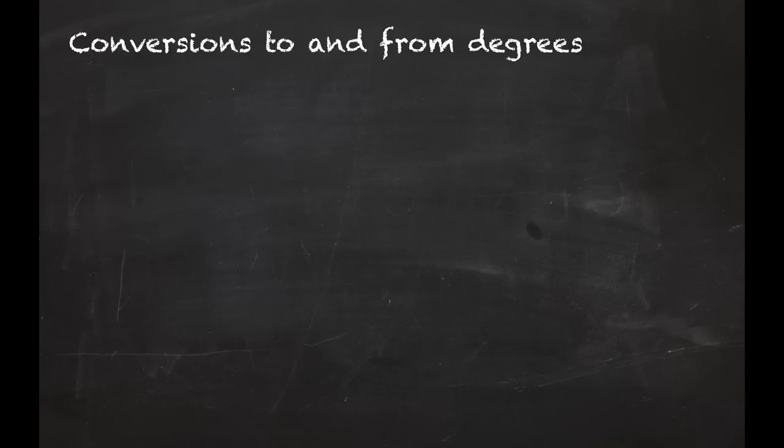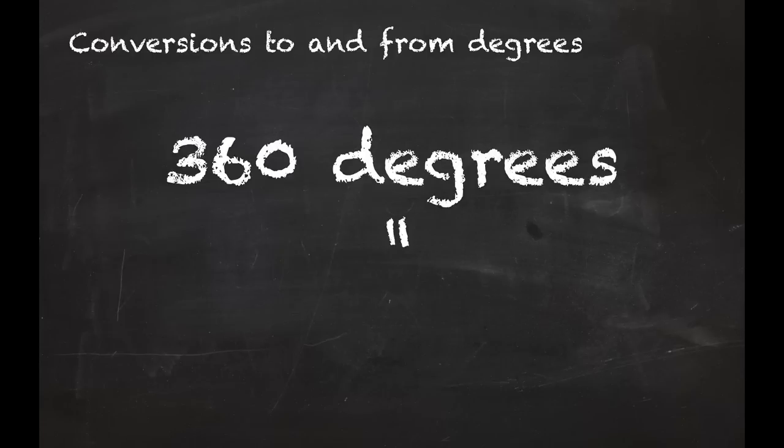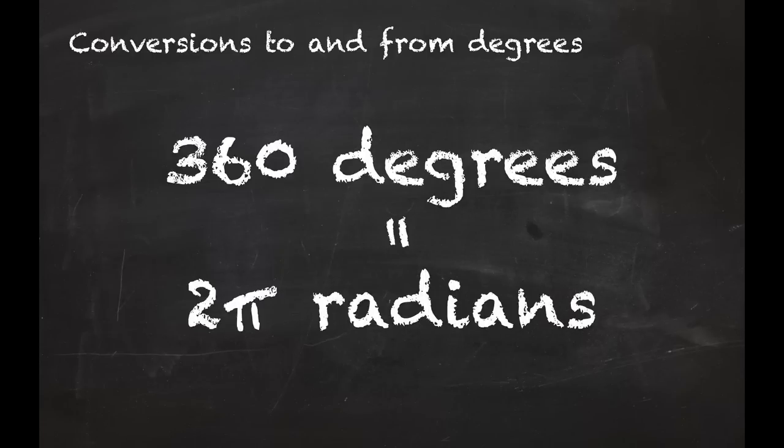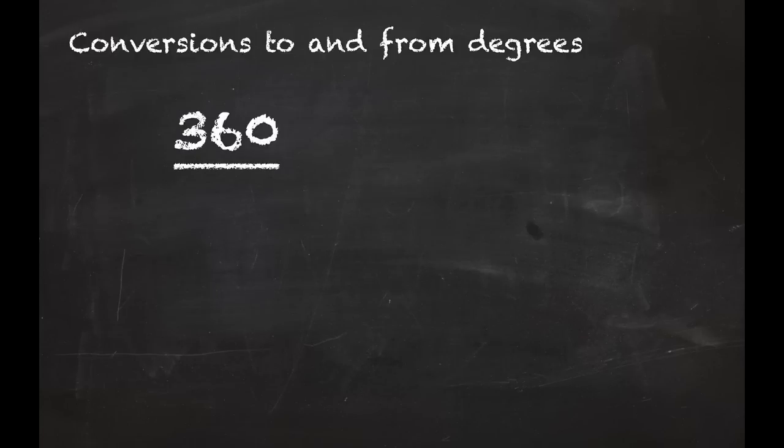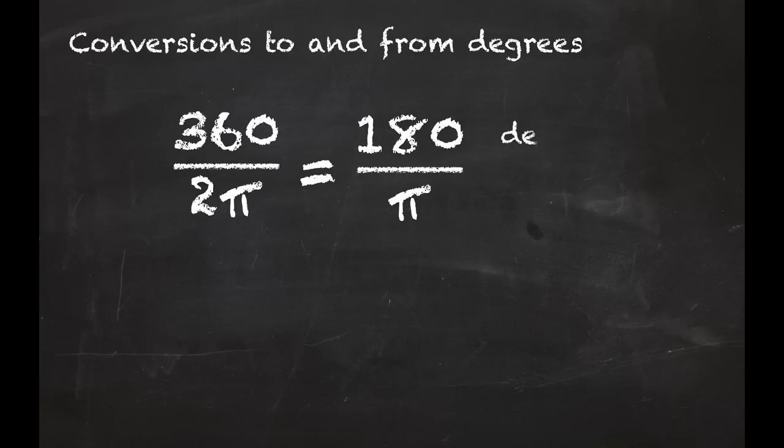You're probably very used to measuring angles using degrees, so let's talk about conversions to and from degrees. There are 360 degrees in a circle, and that has to be the same as the number of radians that fit in a circle, so that's 2π. So 360 degrees equals 2π radians. 360 divided by 2π, or 180 divided by π, gives degrees per radian.